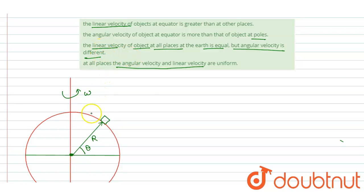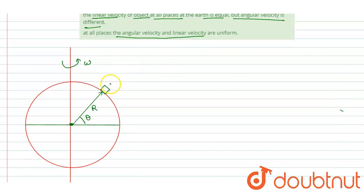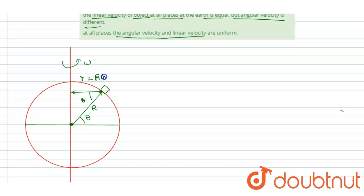For linear velocity, it depends on the perpendicular distance from the axis. At a position at angle theta, if this angle is theta, the perpendicular distance small r equals R·cos(θ). So linear velocity v equals omega times r, which is omega·R·cos(θ). The object at any position performs circular motion with this effective radius.